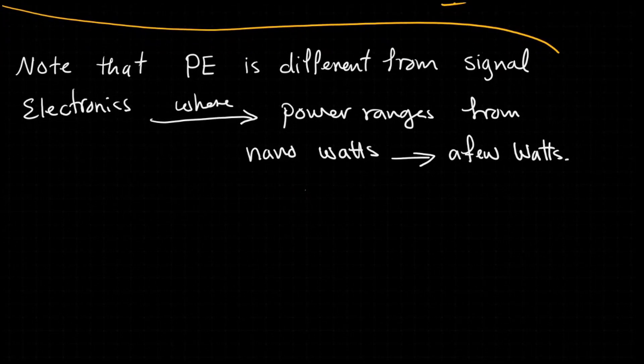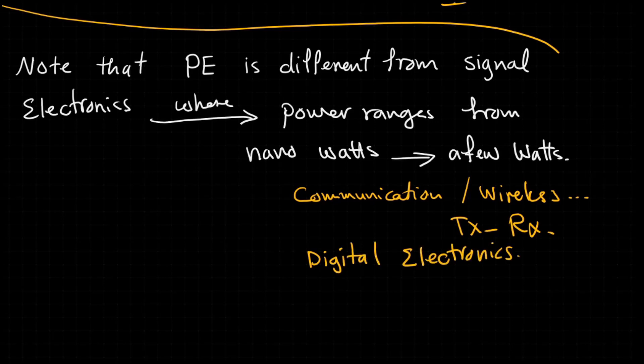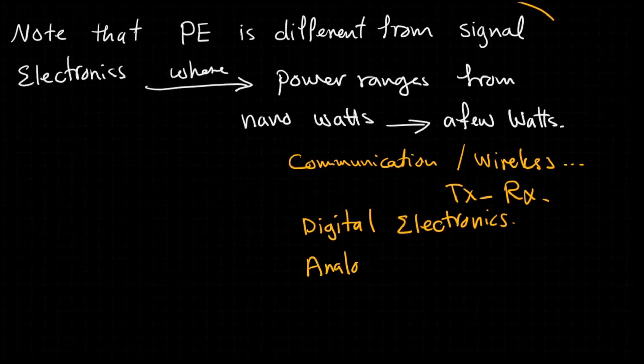Signal electronics can be the electronics used in telecommunications, wireless communications, transmitters and receivers, digital electronics, analog electronics and amplifiers. All these are not power electronics.